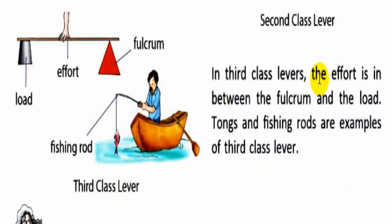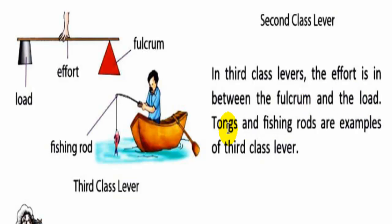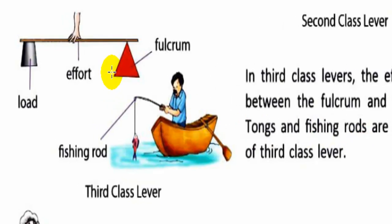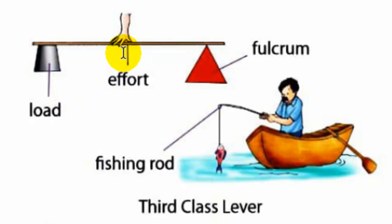In third class levers, the effort is in between the fulcrum and the load. Tongs and fishing rods are examples of third class levers. In the figure, the effort is between the fulcrum and the load, confirming it is a third class lever.